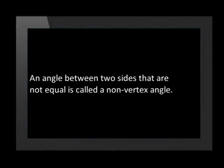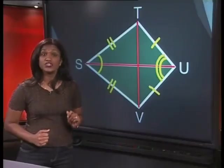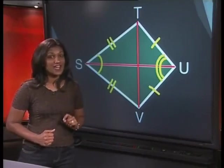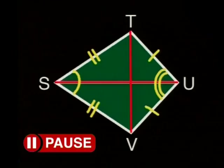An angle between two sides that are not equal is called a non-vertex angle. Now, let's continue with the properties of convex kite. Which of these angles are equal?